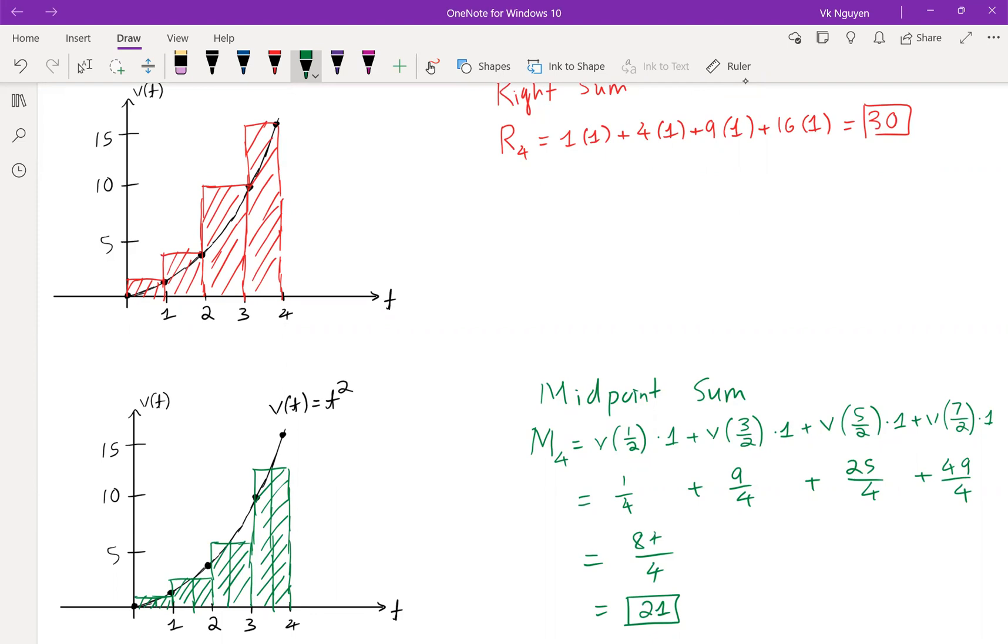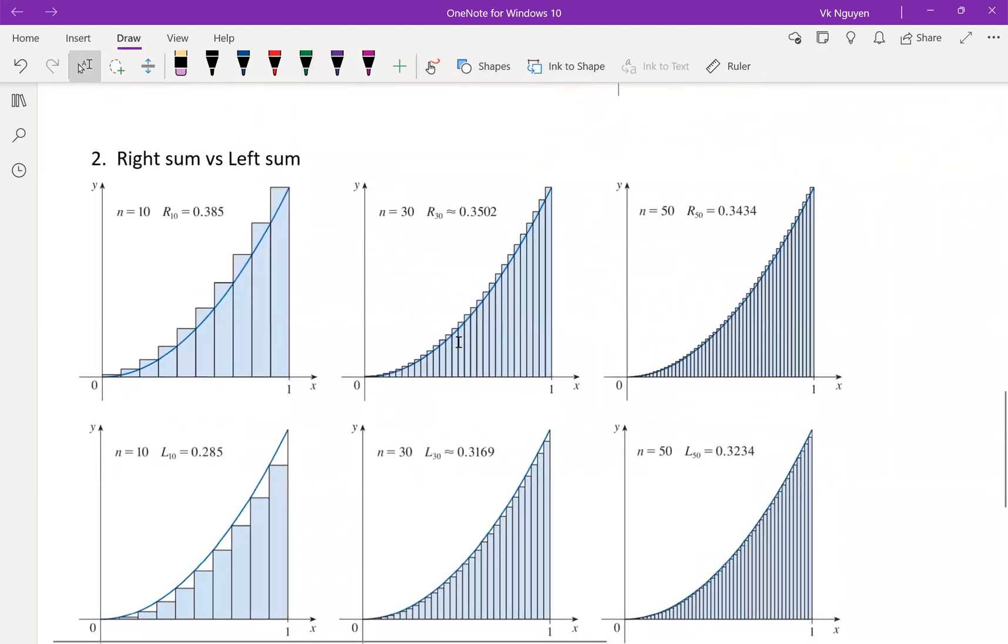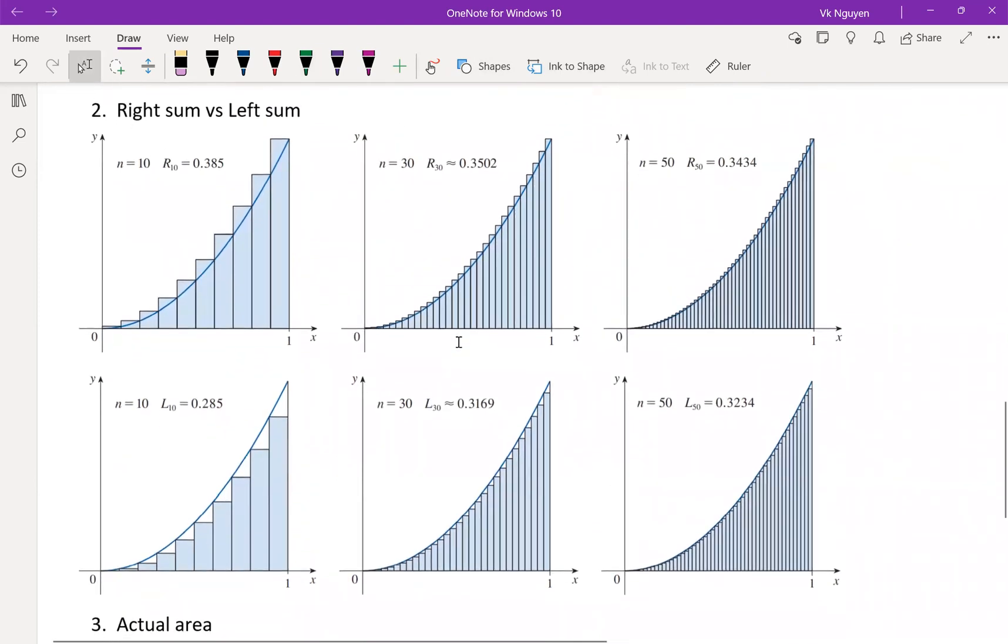Now let's take a look at the left sum and the right sum, do a little comparison. Number 2, right sum versus left sum. The curve here is f(x) equal x squared. And we want to do the estimation of the area under the curve between x equal 0 and x equal 1.